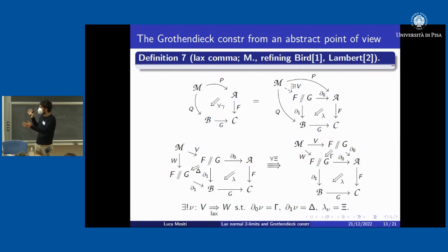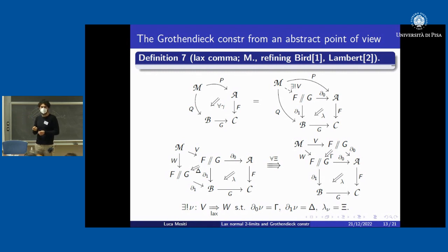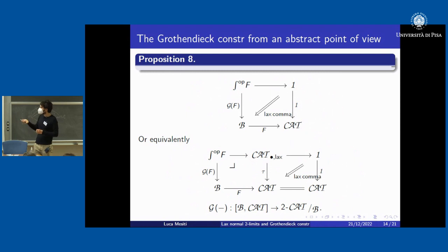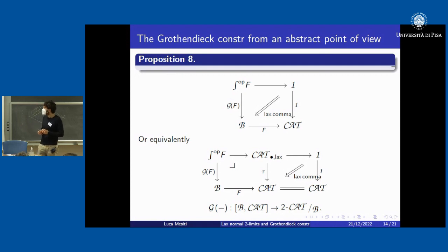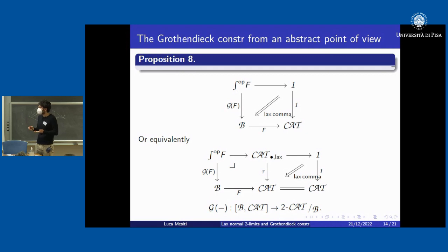We build the definition of a lax comma in any lax Gray-category: in dimension one it asks the same thing as a comma, but in dimension two it asks just to have a free cell between the two pasting steps. We recover a unique two-cell from v to w provided it projects correctly and the free cell associated to the lax interchange rule of 'eta then lambda' is precisely xi. It is true that we can express the two-Cat-enriched Grothendieck construction as a lax comma, or equivalently via a pullback using a lax pointed version of Cat.